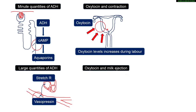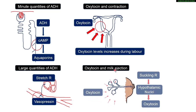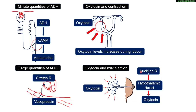The most famous or popular function of oxytocin is what we call milk ejection. You should differentiate it from milk production, which is the function of prolactin — an anterior pituitary hormone. Milk ejection is basically squeezing out the milk.